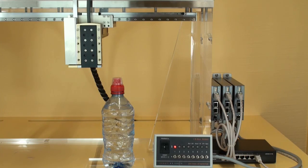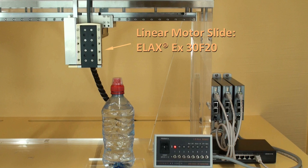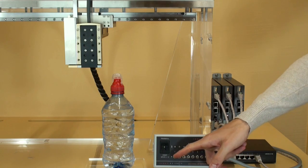In this 3-axis configuration, we see our ELAX EX30F20 as a vertical Z-axis with a spring-operated weight compensation, so that the slide does not fall down even if power is interrupted. The process of this application is to close a water bottle's lid in an automated pick-and-place assembly.